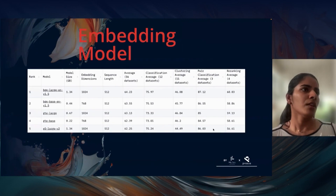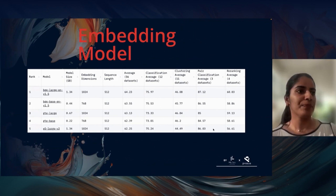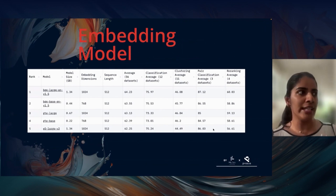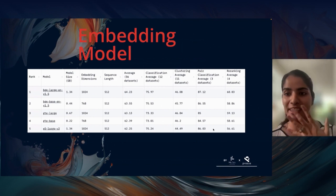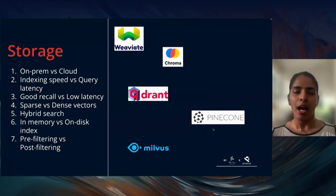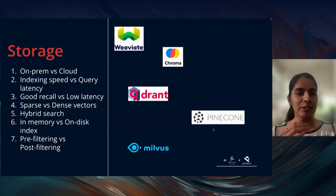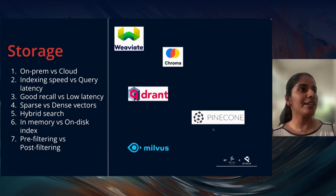After chunking, you embed the chunks by choosing an embedding model. The Hugging Face leaderboard is a good reference, but the top-ranked embedding model may not give the best results for your specific use case — you need to test multiple models. Once embedded, you store them in a vector database. Something as simple as Postgres with pgvector works well, though dedicated vector databases offer more specialized functionality.